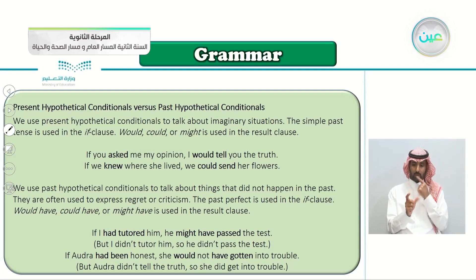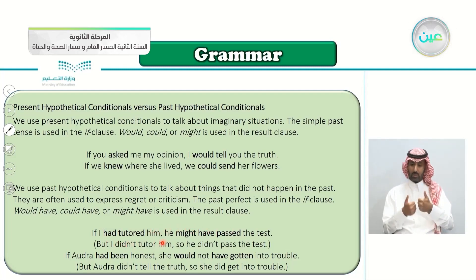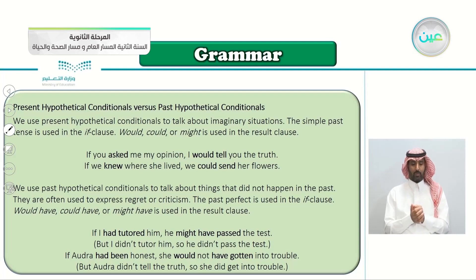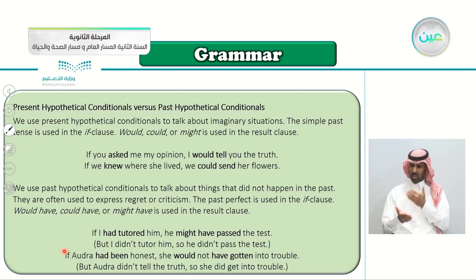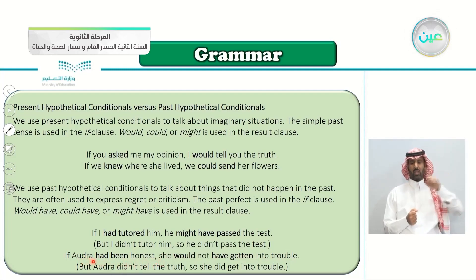Examples: 'If I had tutored him, he might have passed the test' — but I didn't tutor him, so he didn't pass. Another example: 'If Audra had been honest, she would not have gotten into trouble.' Was she honest? No — the reality is that Audra didn't tell the truth, so she did get into trouble.